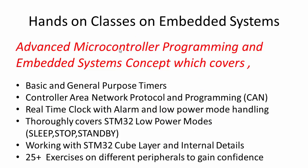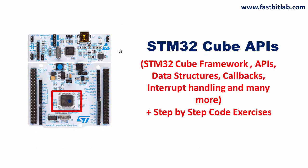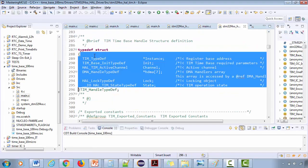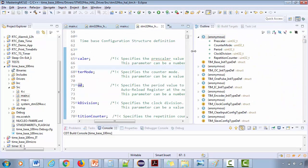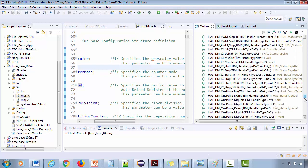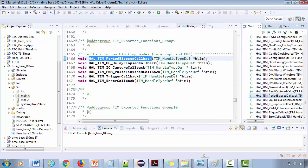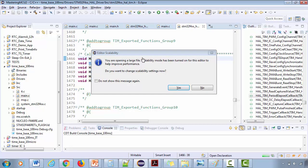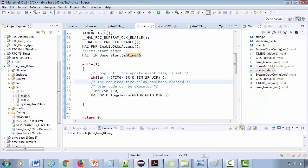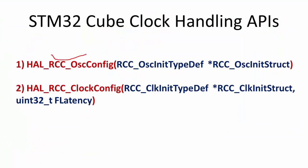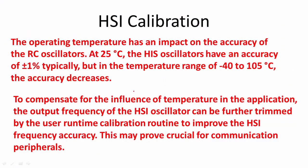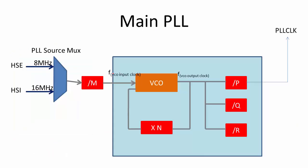In the first section of the course I will be covering the STM32Cube framework and its supported APIs. STM32Cube is a hardware abstraction layer provided by ST to handle various peripherals of the microcontroller, and it is a collection of various driver files. We will understand the framework, the supported APIs, the data structures involved to handle peripherals, the callback implementation, interrupt handling APIs, and many other things.